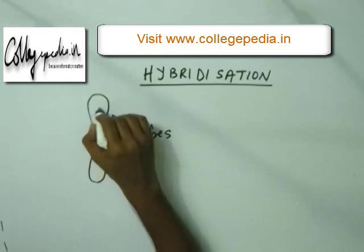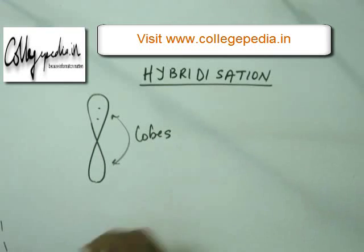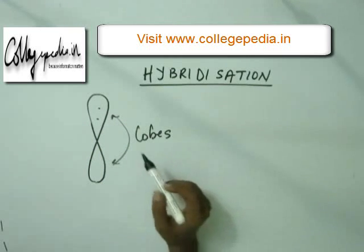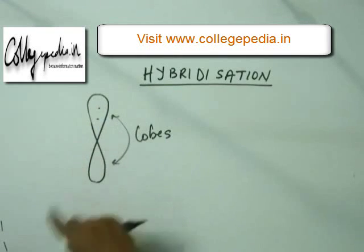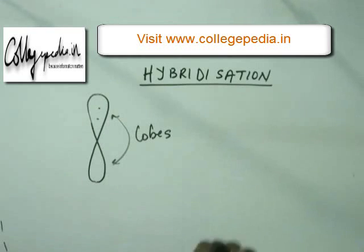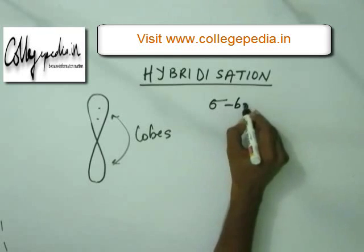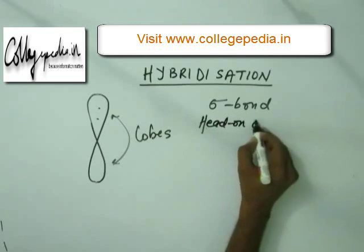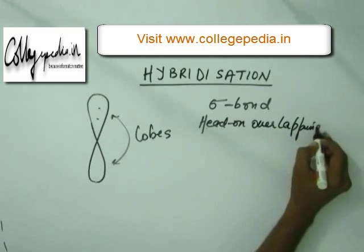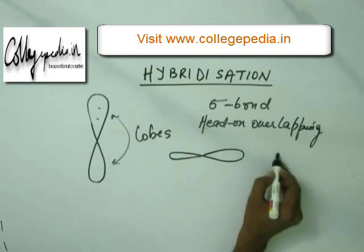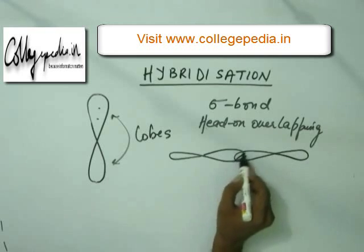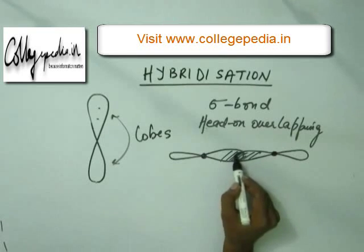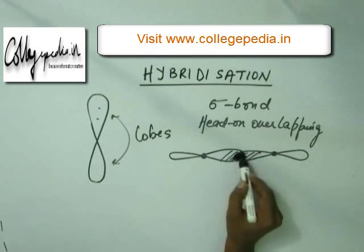Each orbital is capable of containing a maximum of two electrons. Generally, when the atom is in its atomic state and does not make any bond, electrons are in the P orbital which has a dumbbell shape. When a sigma bond is formed, it is formed by head-on overlapping — head-to-head, as if they are colliding. This is called head-on overlapping. The overlapping region is the region common to both orbitals.